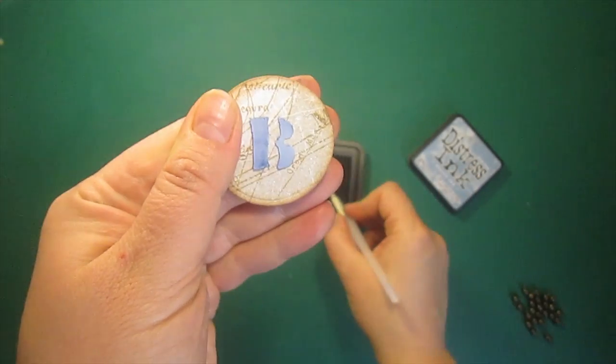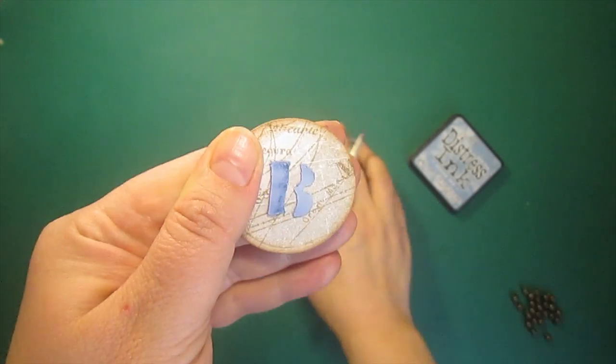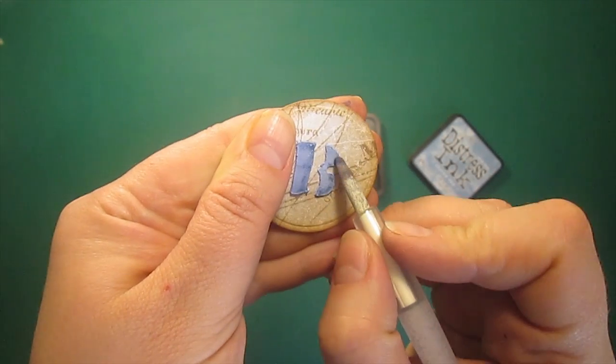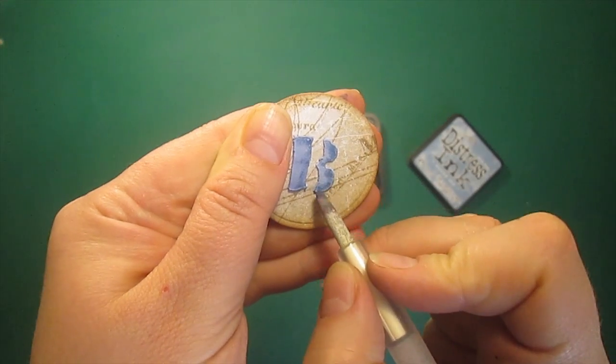To add shading to the stenciled letters I'm using the craft nib holder. It's one of my favorite tools. And stormy sky distress ink.